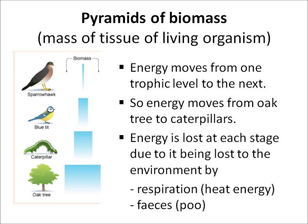Where is this energy lost? It's lost in two main ways. It's lost by respiration, because living things produce heat energy as they're living, and it's also lost in excretion — so it's lost in their feces and their urine as well. Those are the two ways that energy is lost as it moves up the food chain.